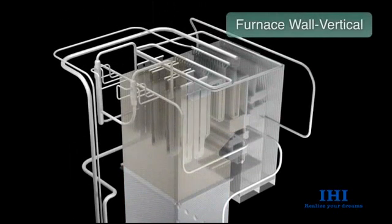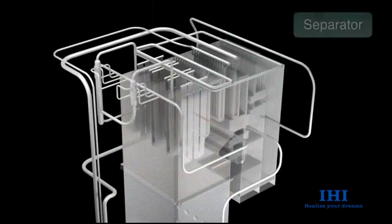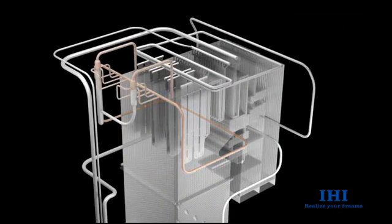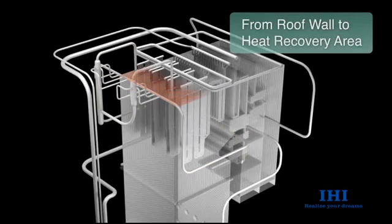During the low load operation of the boiler, the fluid at the inlet of the steam separators contains water and steam, which are separated by the steam separators. The steam from the steam separators is sent to the heat recovery area through the furnace roof wall tubes.